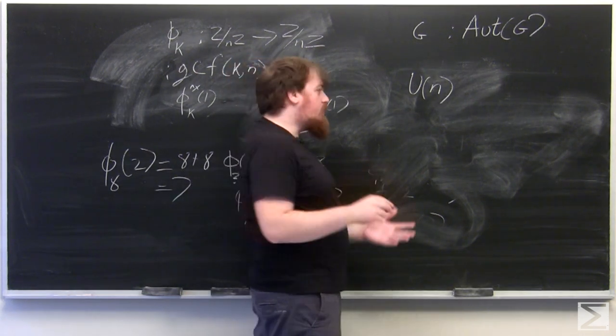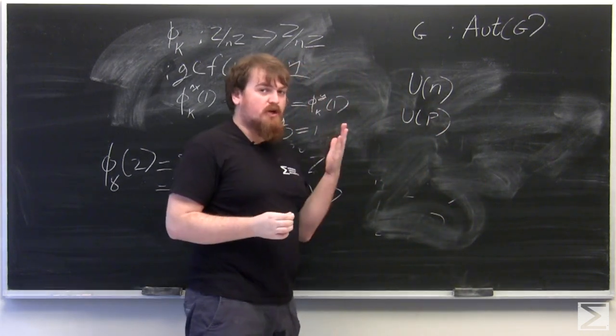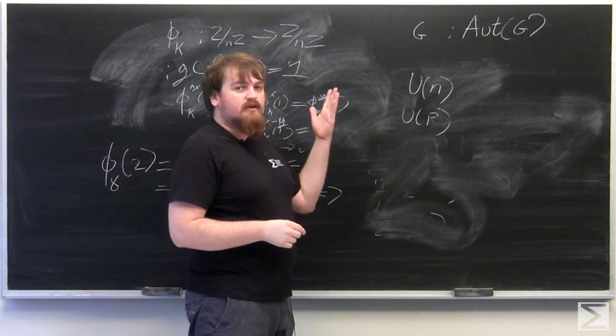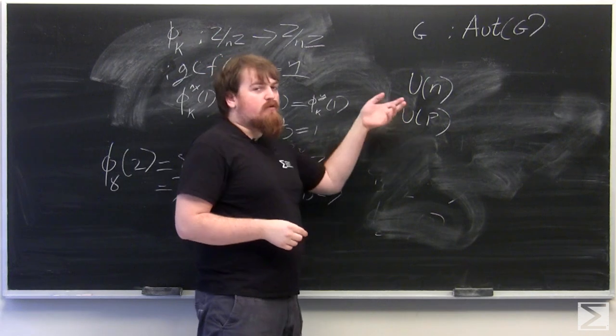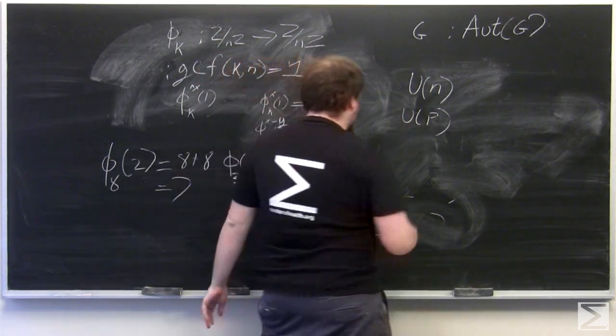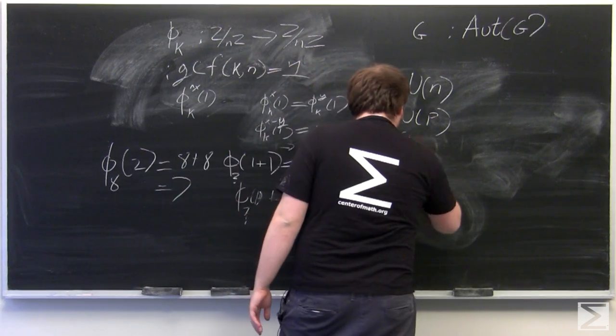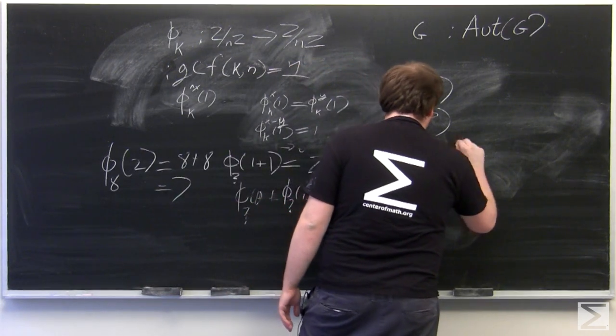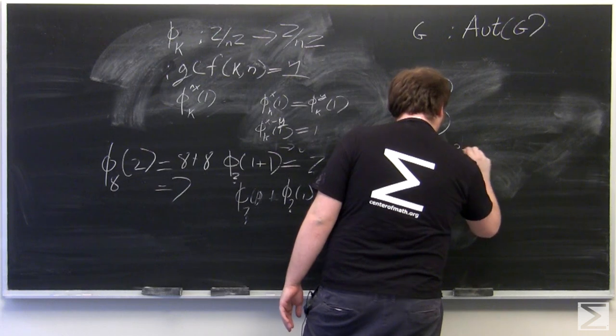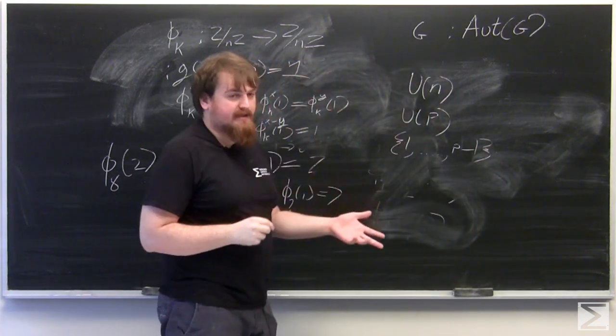So if we consider U of P, then everything less than P is going to be coprime to it. And so U of P will be all the numbers less than P that aren't 0, of course, which is going to be 1 all the way up to P minus 1. And so U of P will have P minus 1 elements.